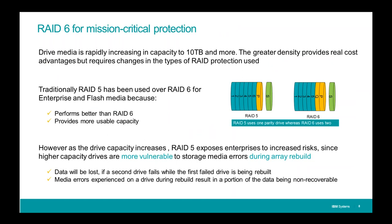Fifth, we're now going to use RAID 6 as the default mechanism for protecting data inside the DS8000. The DS8000 optimizes for four things: data integrity, system reliability, performance, and features and functions. The reason we're going to RAID 6 as default is that the workhorse over years has been RAID 5. But drives keep getting bigger, and we don't want customers exposed to the possibility of losing data during a drive rebuild if a second drive or sector on a second drive has a problem.